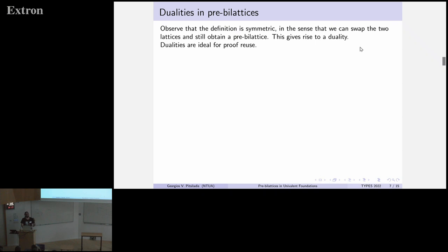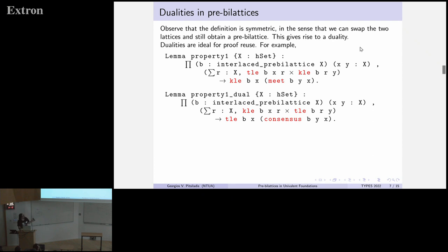Now, the definition of pre-bi-lattices is symmetric. It's just two lattices. We can exchange them and obtain another pre-bi-lattice. This is a duality. Dualities are great because we can reuse proofs. For example, we have a property. It's a dual property that just exchanges truth-by-knowledge lattices. Having proven the first one, the second should and can be proved like this easily.